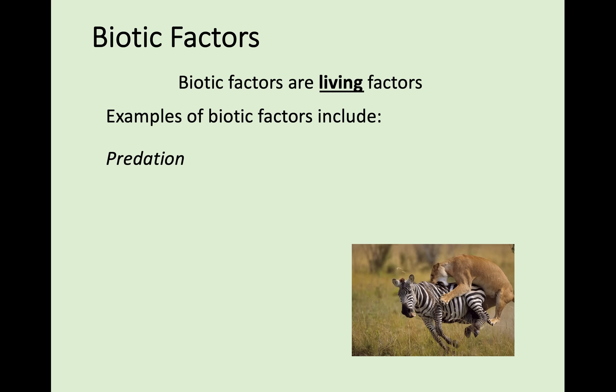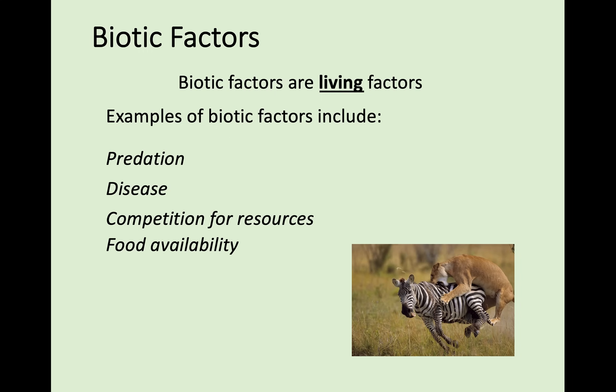Examples of biotic factors include predation, disease, and competition for resources. Predation is a living thing eating another living thing — it's a living factor. Competition for resources involves living things fighting each other. Disease is one that people often forget and think is abiotic, but disease is actually caused by a living thing, so it is a biotic factor. Food availability is also a biotic factor, similar to competition for resources.